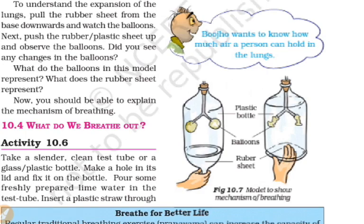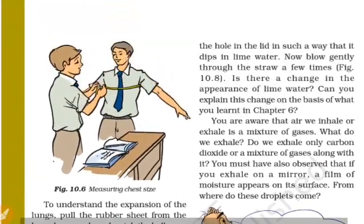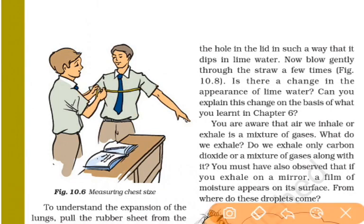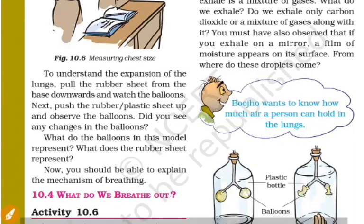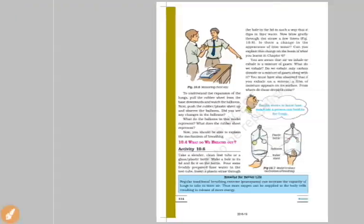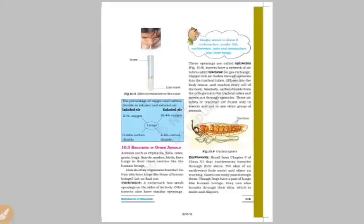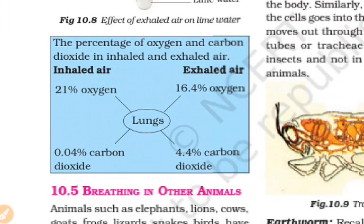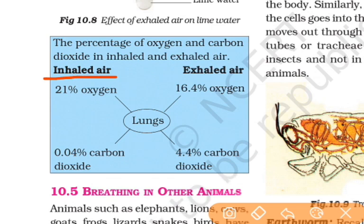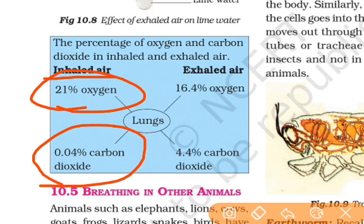This is the model showing the breathing mechanism, including chest expansion. Inhaled air contains about 0.04% carbon dioxide. Exhaled air contains about 4% carbon dioxide and 16.4% oxygen, compared to the 21% oxygen in inhaled air.